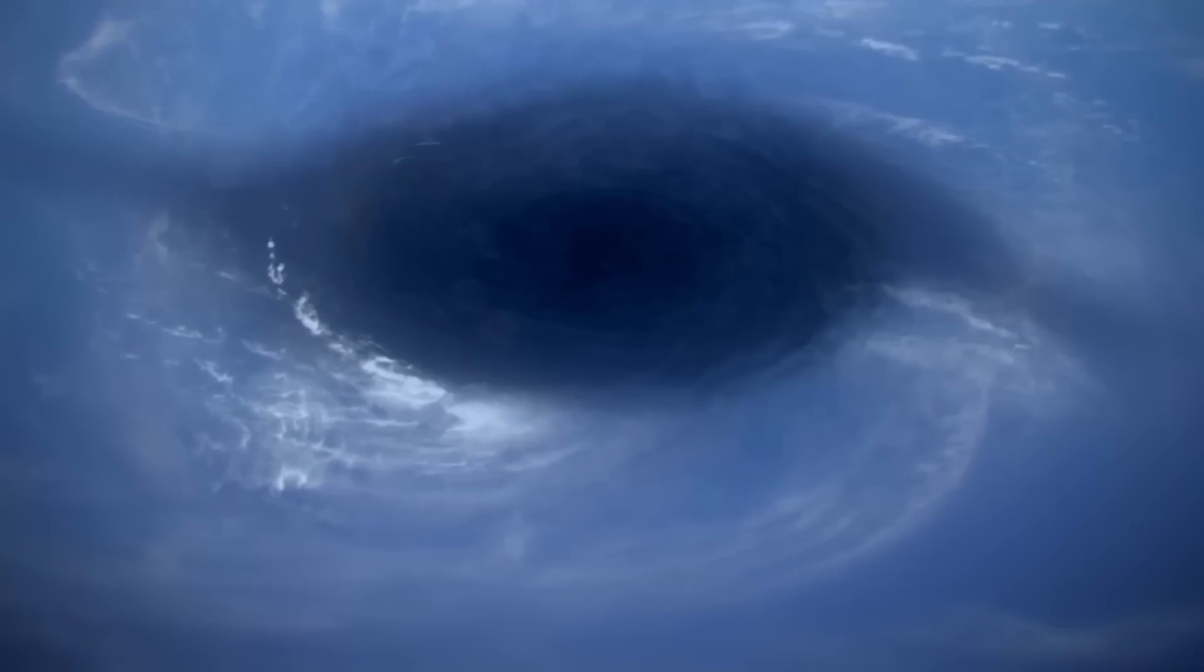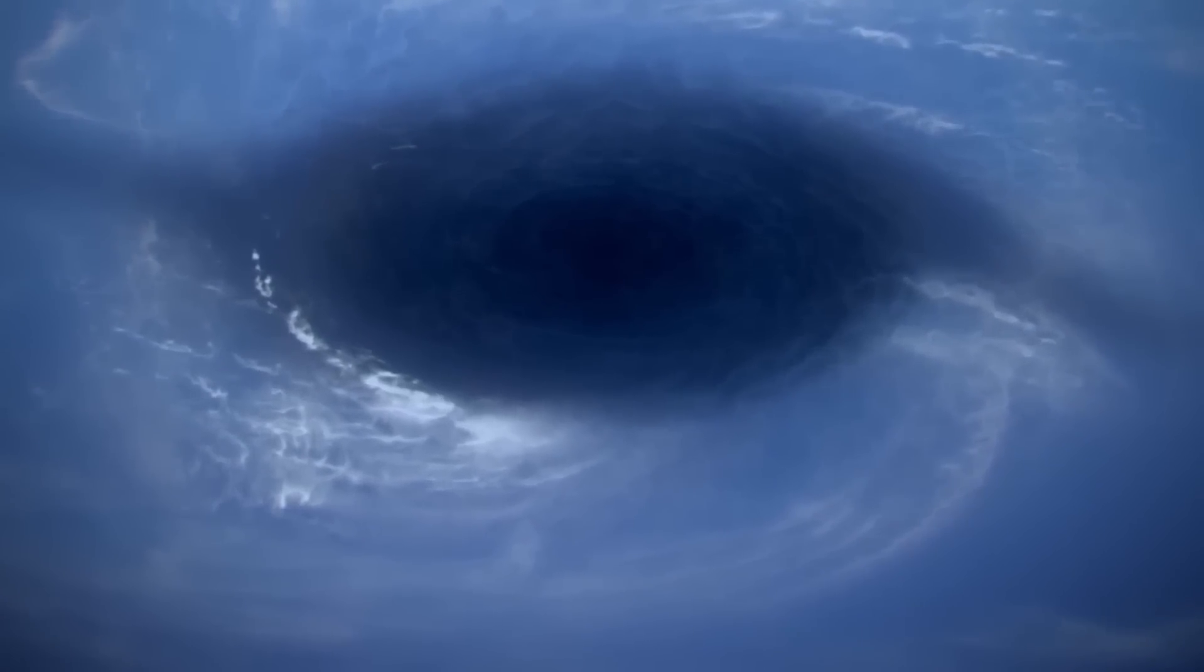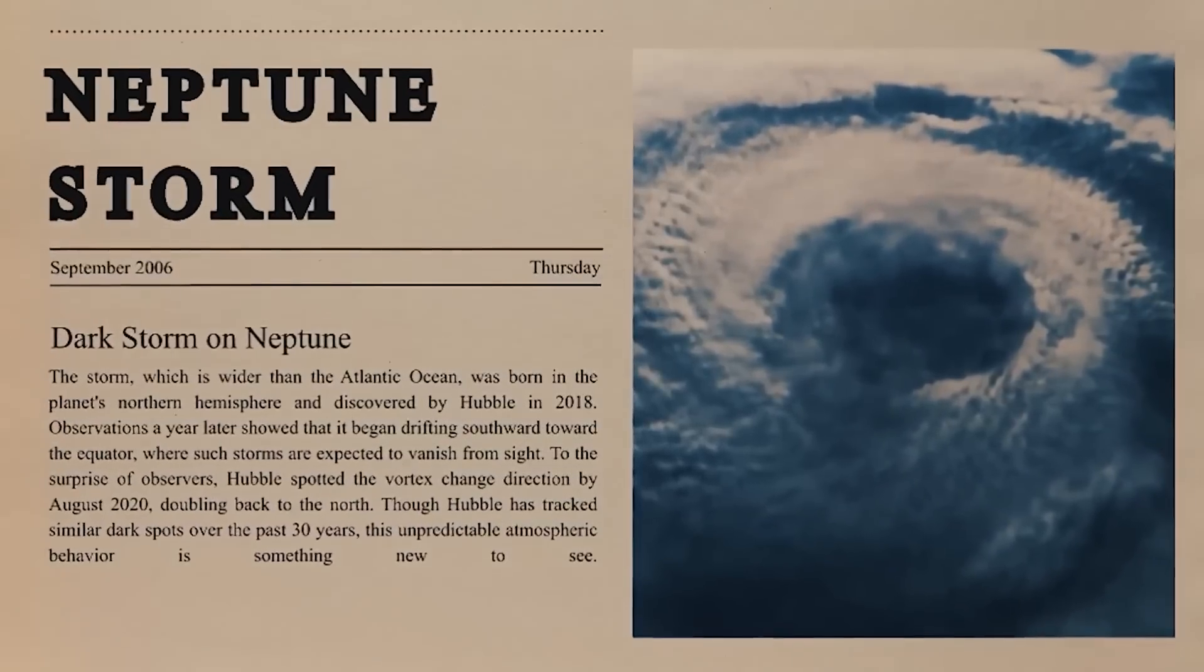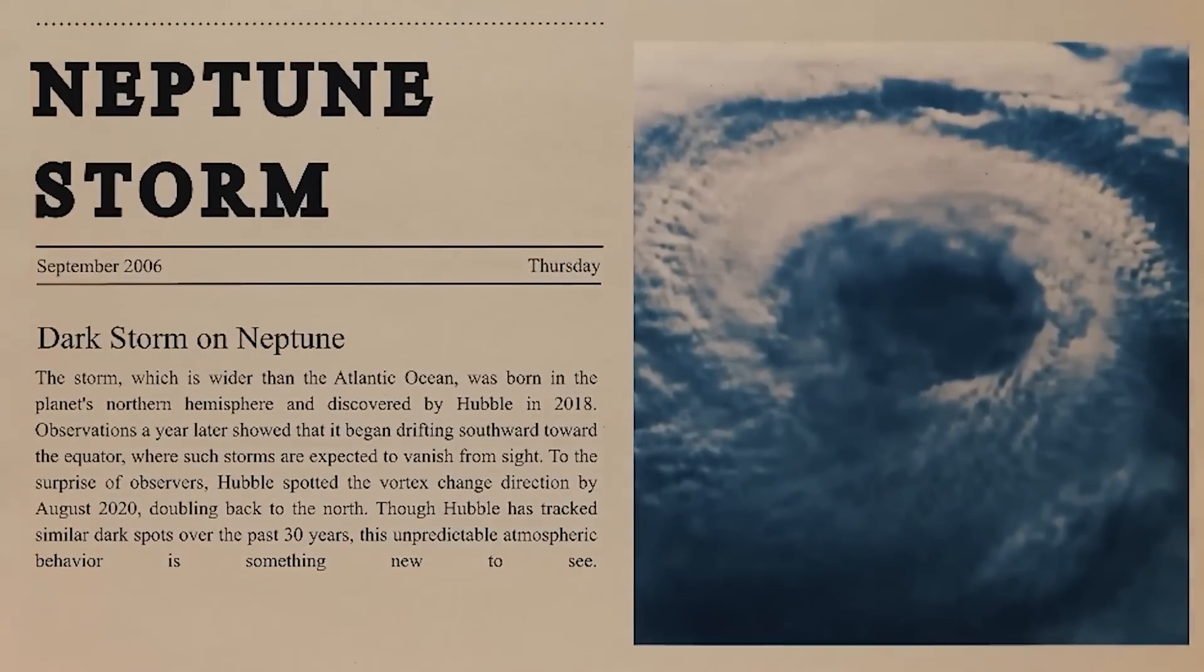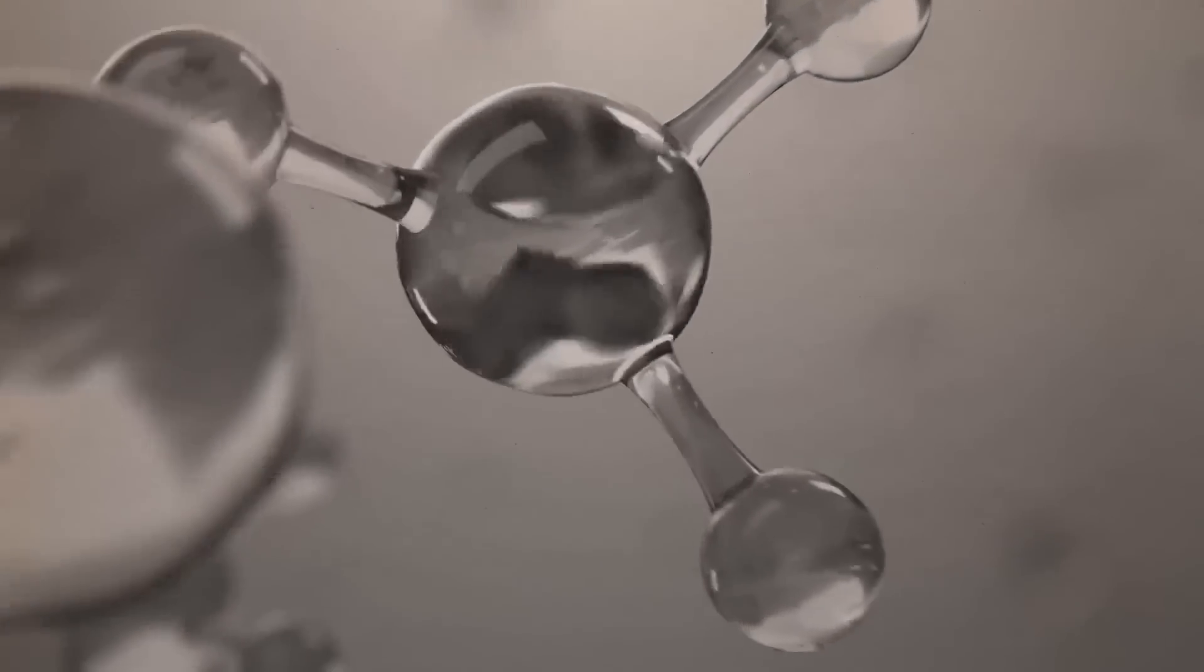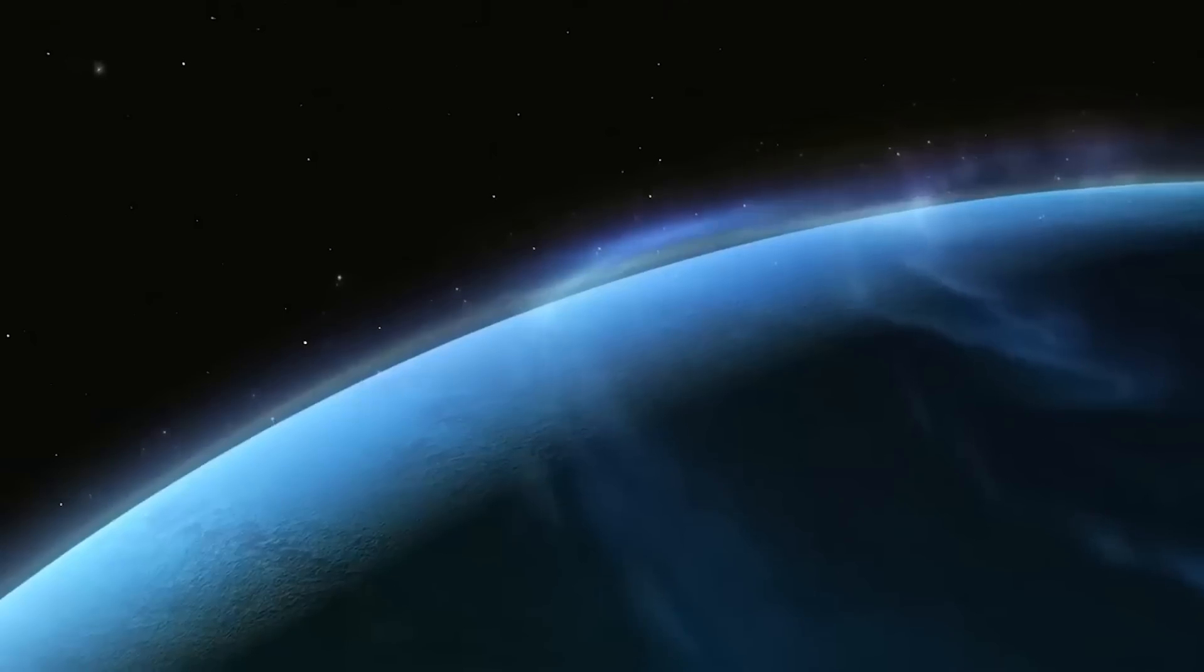Although it is thought that the planet has water, the blue tint is actually a result of the methane in Neptune's atmosphere. Neptune's atmosphere is composed, as best we can tell from data gathered from spacecraft like Voyager 2, of around 74% hydrogen, 25% helium, and 1% methane and other small components.